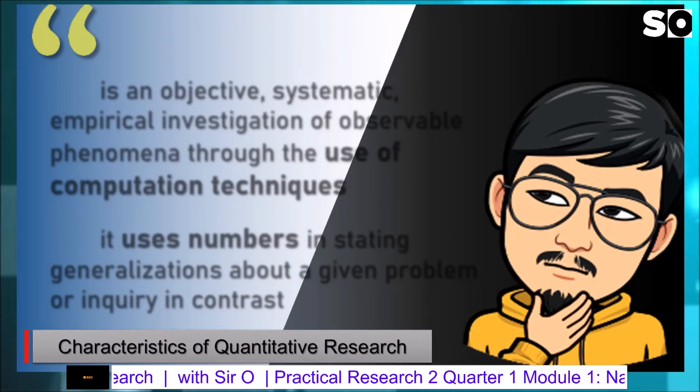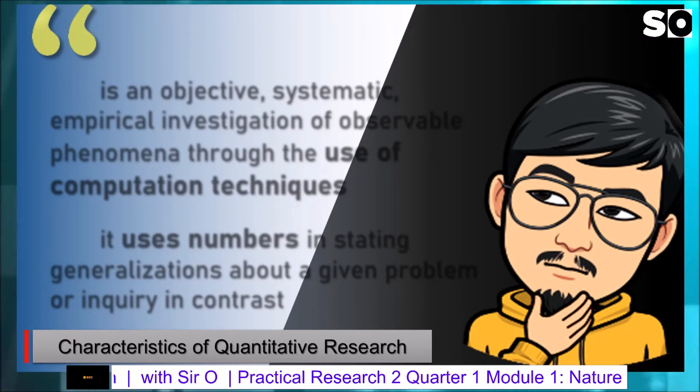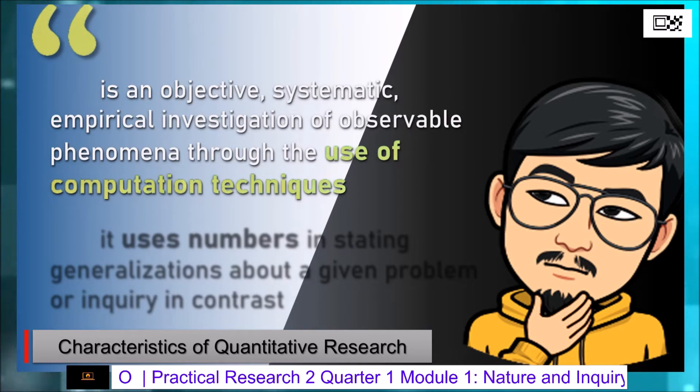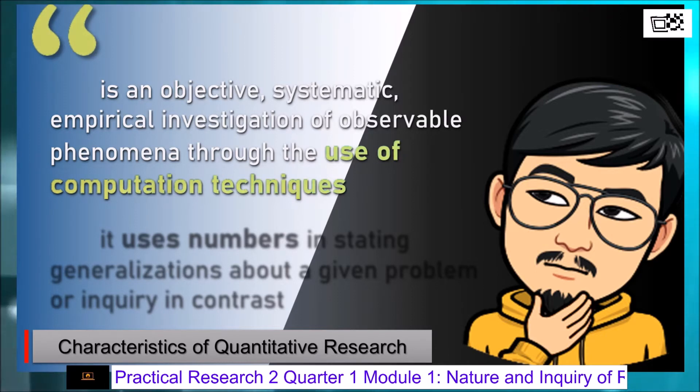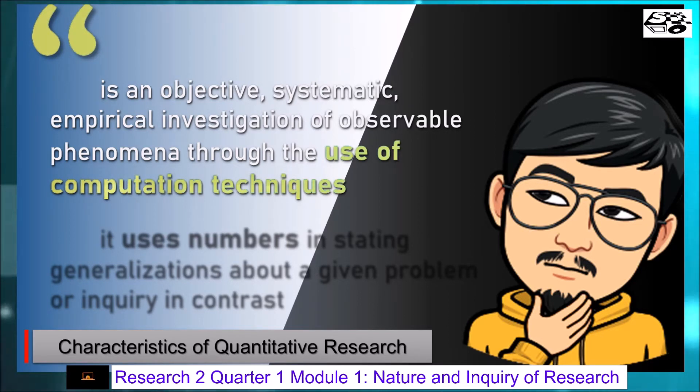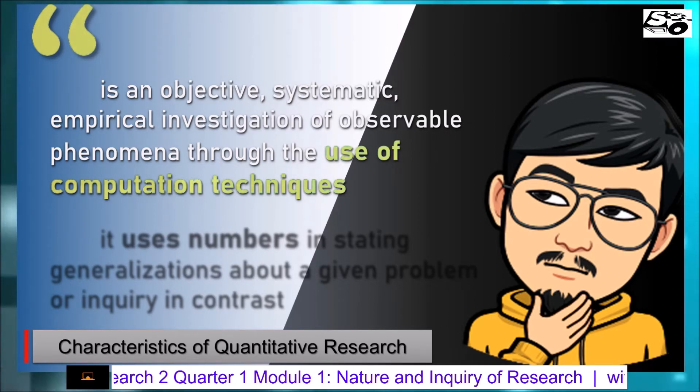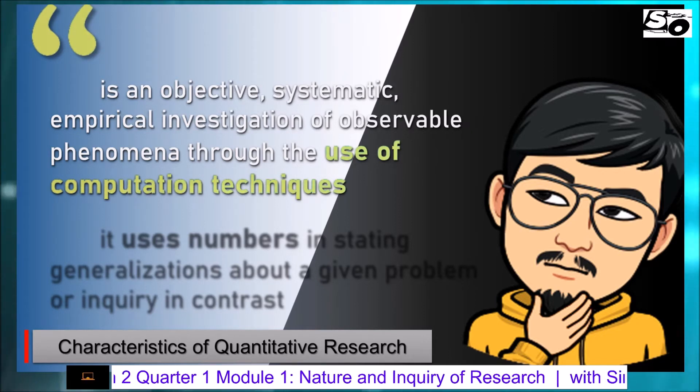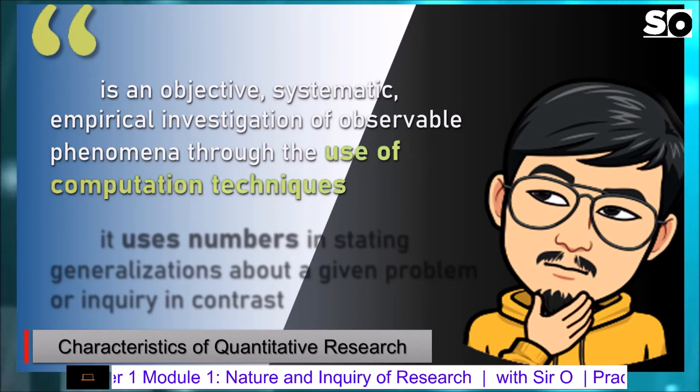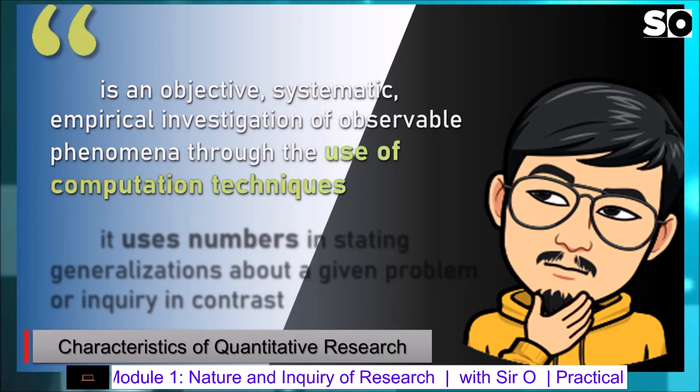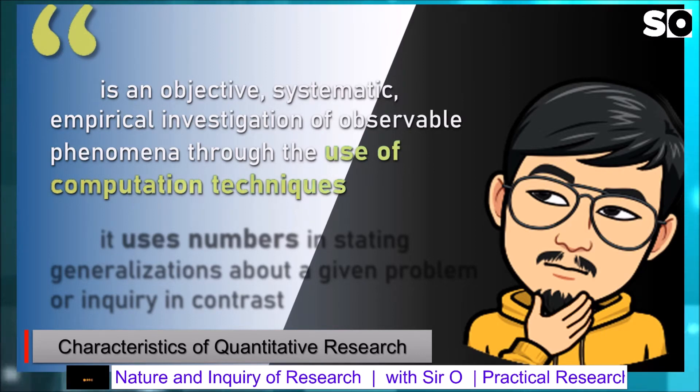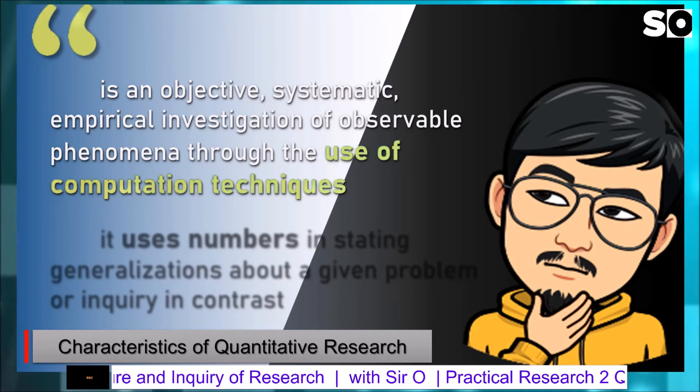Topic 1: Characteristics of Quantitative Research. Una, quantitative research is an objective, systematic, empirical investigation of observable phenomena through the use of computation techniques. O ito ay may iisang layunin, may sinusunod na sistema ng paggawa, at paggamit ng mga statistical treatment sa pagsiyasat ng mga bagay-bagay. Kung matatandaan ninyo, ang statistical treatment na natalakay natin nung kayo ay nasa grade 11 sa subject na statistics and probability, ay ang Slovene's formula.